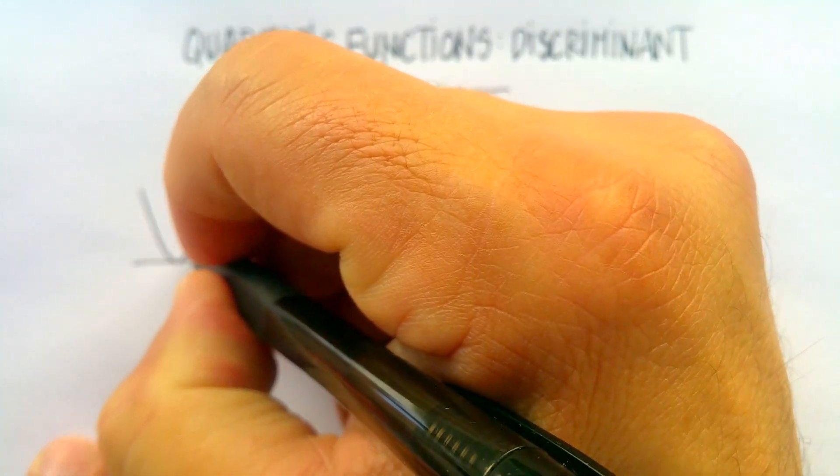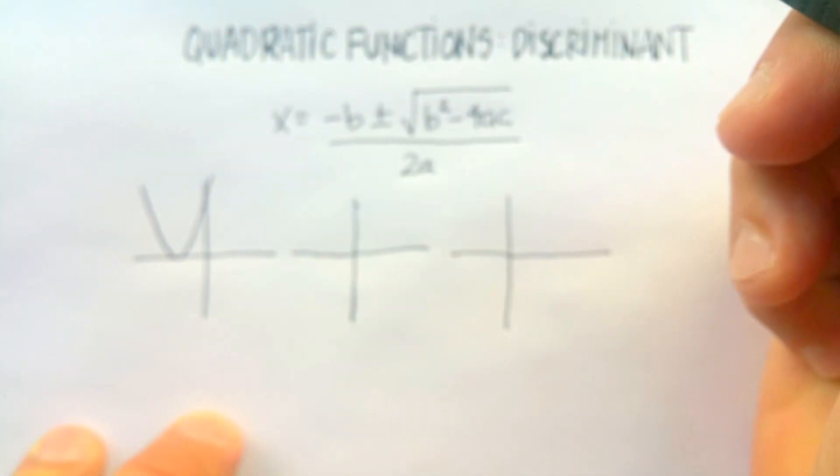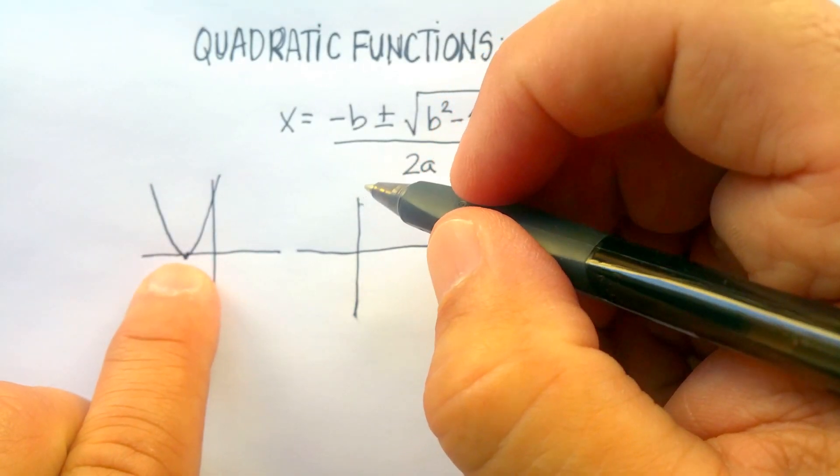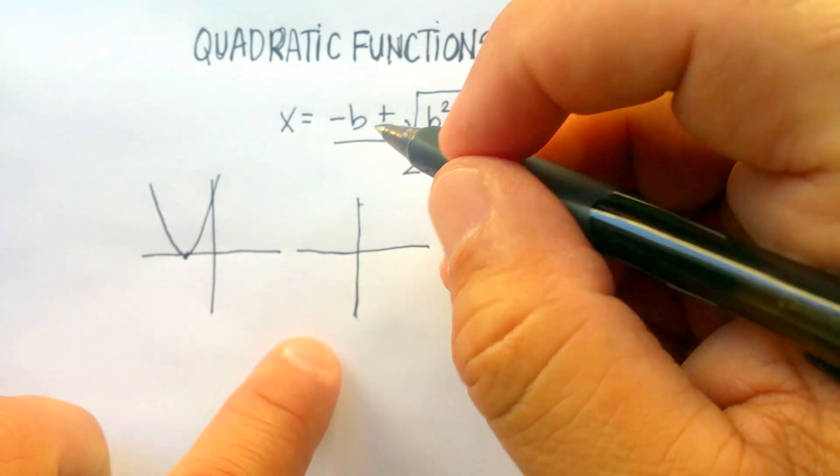So here's where my parabola crosses the x-axis one time. The vertex, essentially, is on the x-axis.